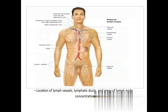You can see the nodes here. If the nodes are present near the neck region, we call them cervical nodes. If present near the chest region or nearby the heart, we call them mediastinal nodes. If present near the armpit, we call them axillary nodes. If present near the groin region, we call them inguinal nodes.